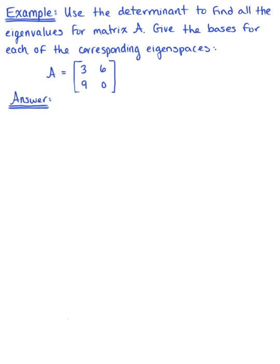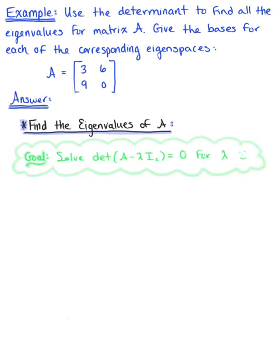Use the determinant to find the eigenvalues of matrix A, and give the basis for each of the corresponding eigenspaces. So our goal here is to solve the determinant of matrix A minus lambda times the identity matrix equal to zero for lambda.